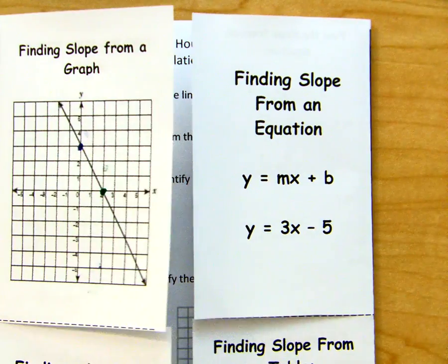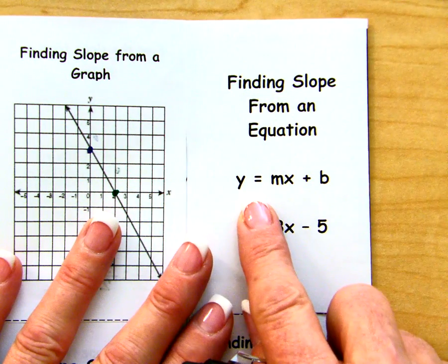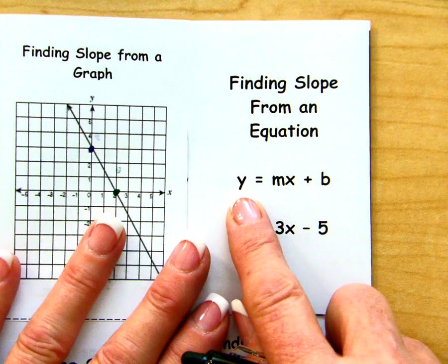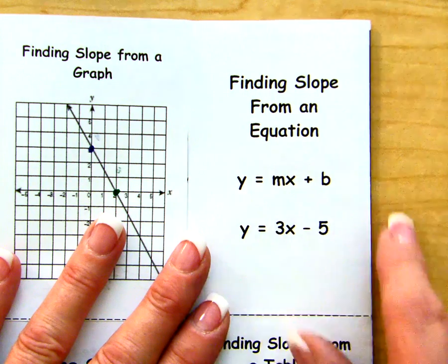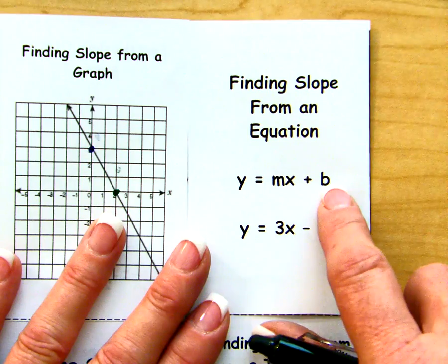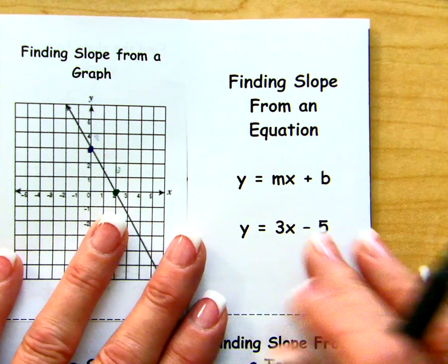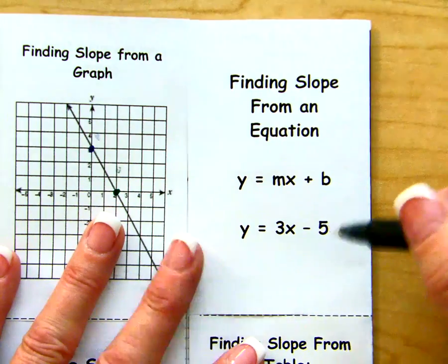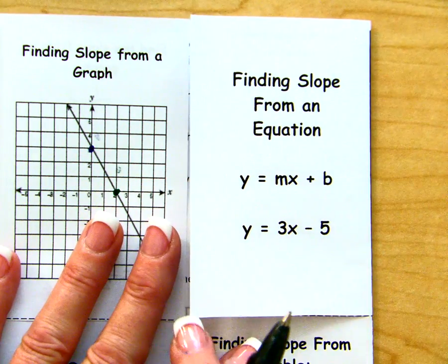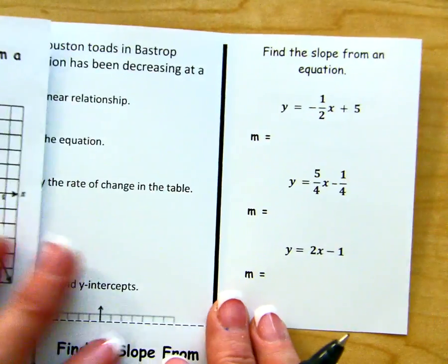In part three, we're looking at finding slope from an equation. Whenever we are given an equation and we need to find slope, we can solve for y or put it into slope-intercept form. Here is your slope. Here is your intercept. y equals 3x minus 5 is an example of an equation written in slope-intercept form. So let's open up this flap and look at some of the examples. We have three of them.